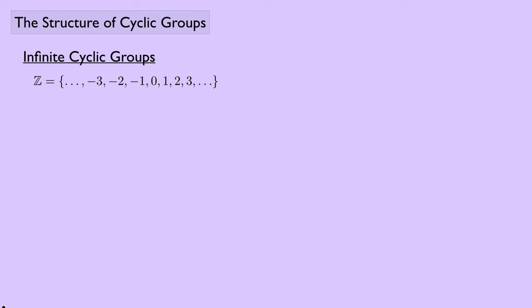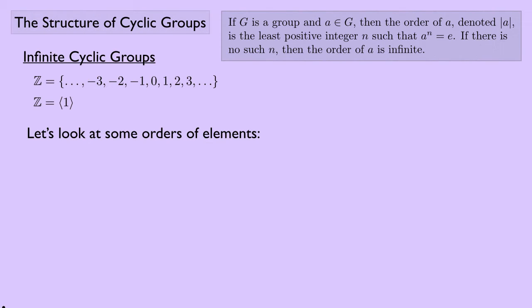First we'll look at infinite cyclic groups. Z, the set of integers under addition, is a good example and is generated by the element 1. The order of an element A in a group G is the least positive integer n such that A to the n equals the identity; if no such n exists, the order of A is infinite.